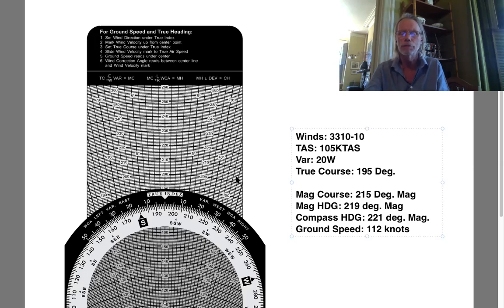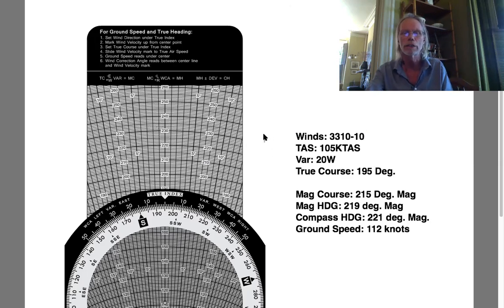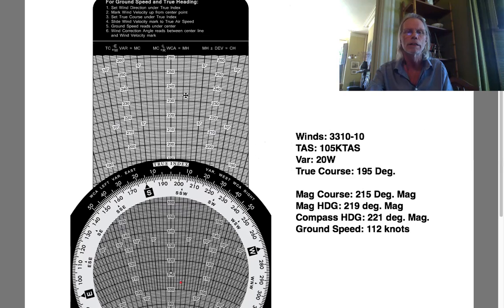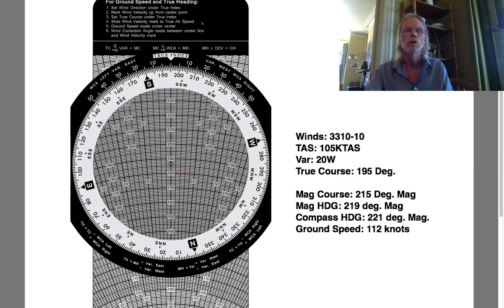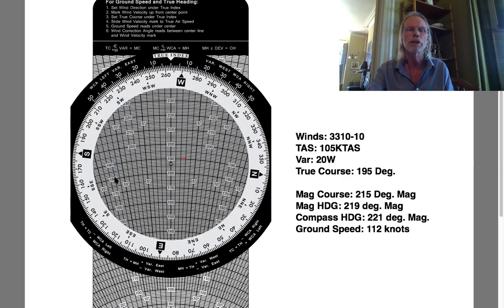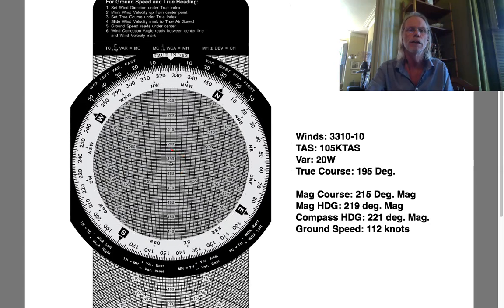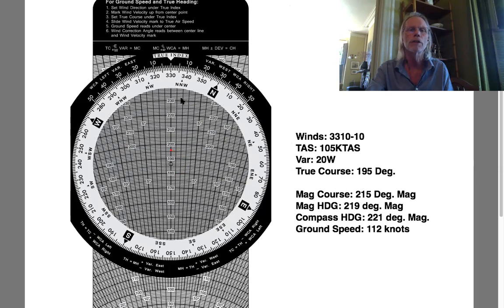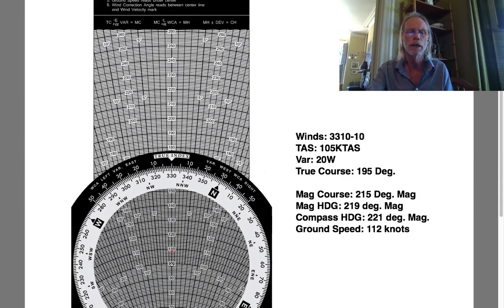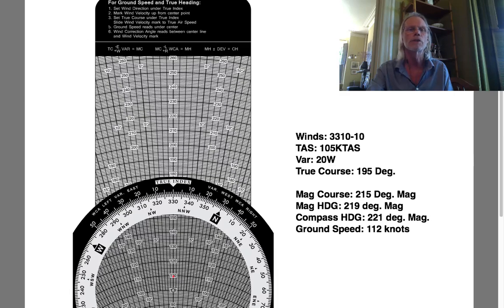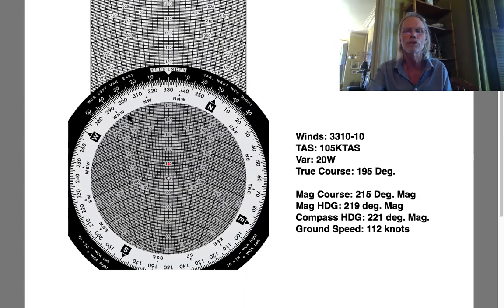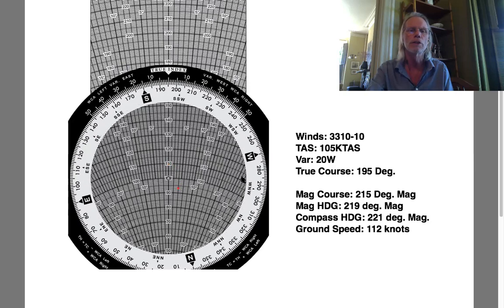So there you go — that's the use of the triangle of velocities on the E6B. Just to recap: the very first thing we were supposed to do was set wind direction under true index. The winds were 330, so 330 under the true index — here it is there. Mark wind velocity up from center point — I put the center point on 100, then marked with the red dot the 10-knot wind up from 100. You can see it there. Then the next thing was set the true course under the true index — the true course, the map course, which is 195 degrees. There's 195 degrees. You can see how the wind dot has now swung around behind and to the right.